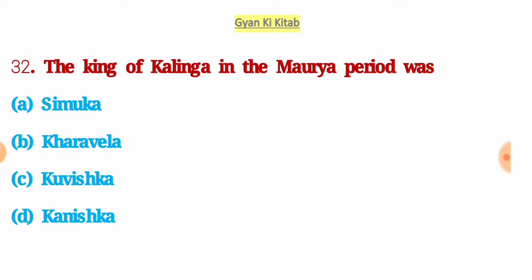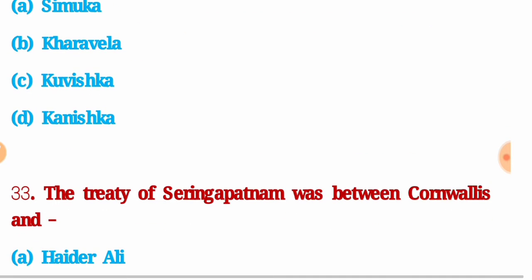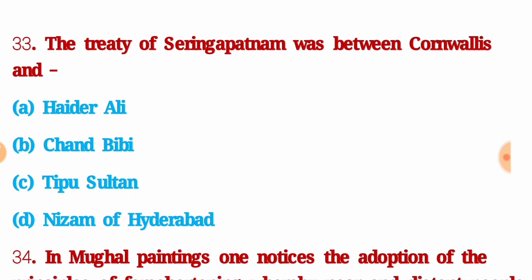Next question: the king of Kalinga in the Maurya period was — the right answer is option B: Kharavela. Next question: the Treaty of Seringapatam was signed between Cornwallis and — the right answer is option C: Tipu Sultan.